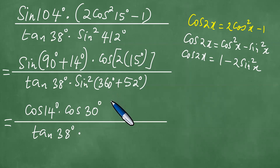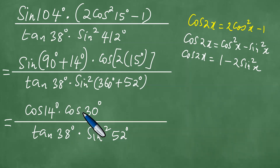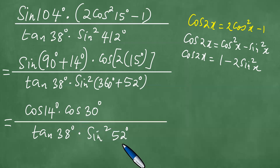360 plus is in the first quadrant where all functions are positive, so sine squared of 412 becomes sine squared of 52 degrees. Now 30 degrees is a special angle, and 14 degrees is a small angle. 52 degrees can be related to 38 degrees — you can subtract 38 from 52 to get 14. So in the numerator we have cosine 14 degrees and cosine 30 degrees.